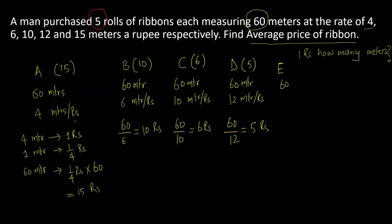And there is one more roll, E - 60 meters of length, 15 meters a rupee is the cost. So the cost of roll E is going to be 60 divided by 15 meters per rupee. I'm just going to show you the unit - it's going to cancel out, and I'm left with 4 rupees.